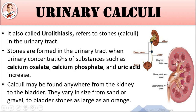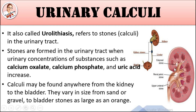Urolithiasis refers to stone formation — some stone or substance which forms in the urinary tract. If we read the urinary construction, substances such as calcium oxalate increase in our kidney system. Calcium, fast food, and uric acid are reasons why stone construction occurs in our kidney.